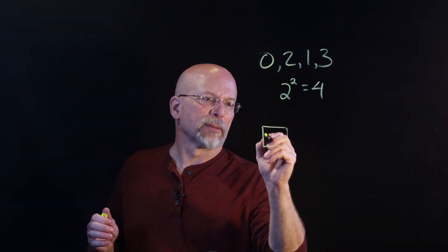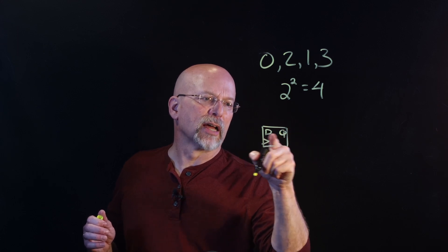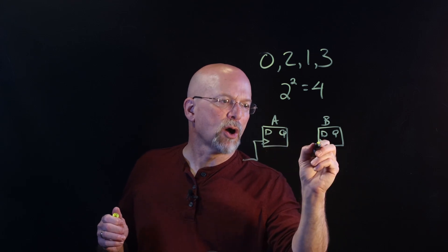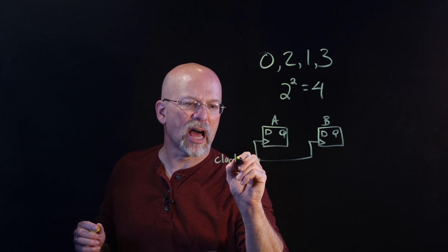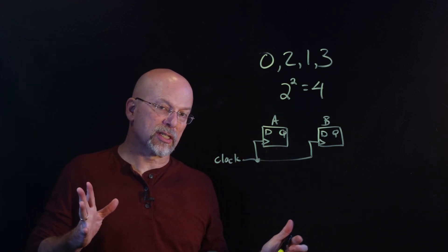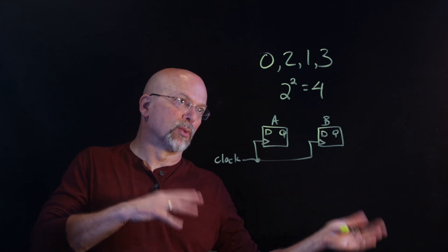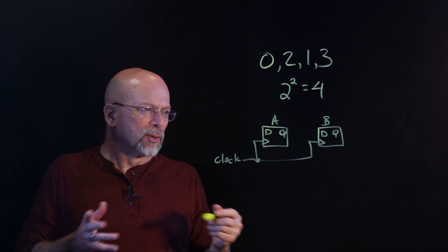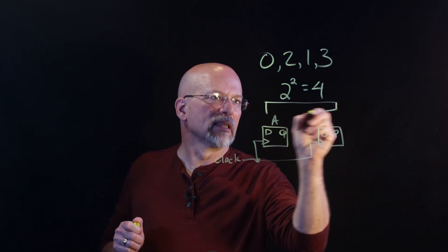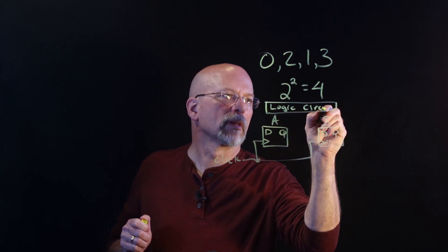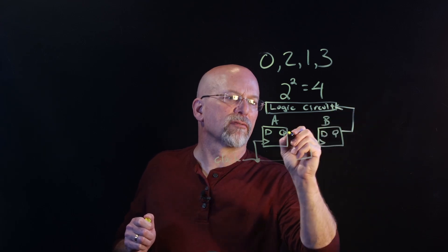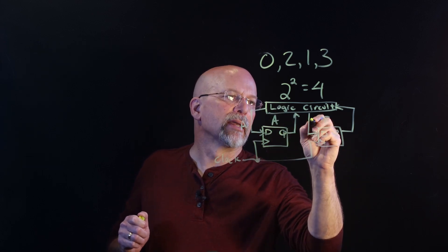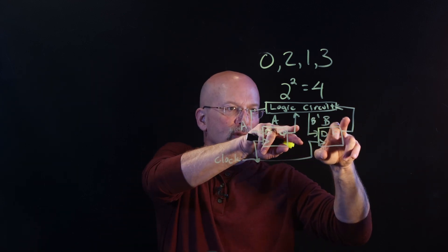The system is going to look like this: one D flip-flop with D, Q, and clock, and another D flip-flop with D, Q, and clock — we'll call them A and B. The only input to our system is a clock, so we turn it on and it starts counting 0, 2, 1, 3, 0, 2, 1, 3 — period of four. There will be a combinational logic circuit that takes the current values of A and B and produces new values A-prime and B-prime.